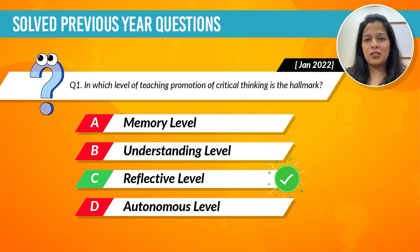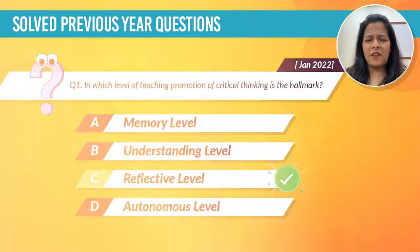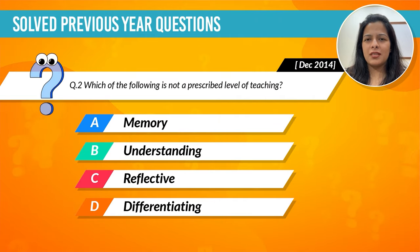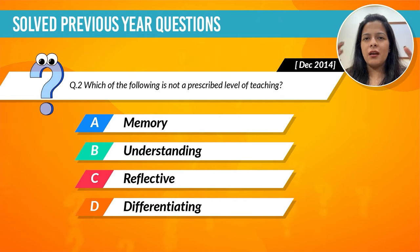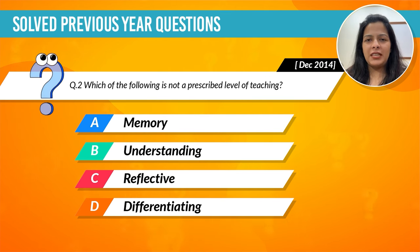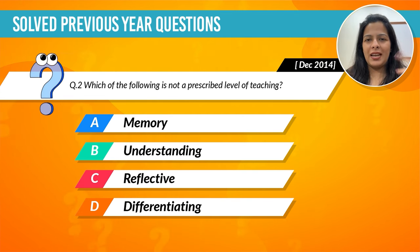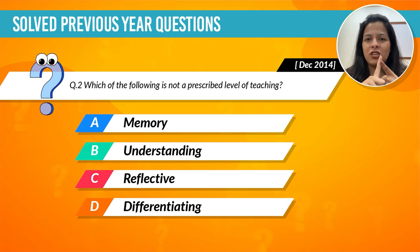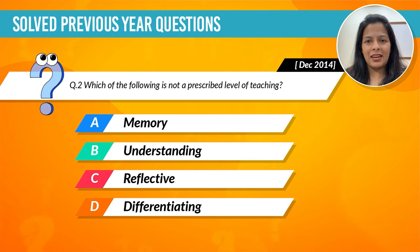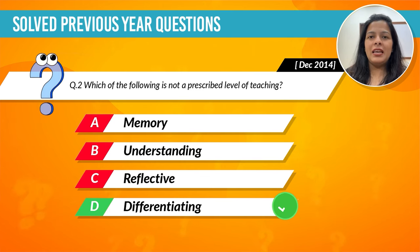Now we move on to the next question, which is very simple. It is asking which is not a prescribed level of teaching. We have read about the three levels: memory, understanding, and reflective. Differentiating level is not a level of teaching, and hence the correct option is differentiating.